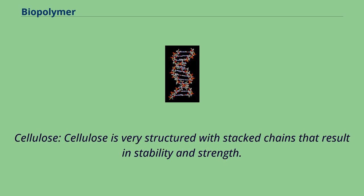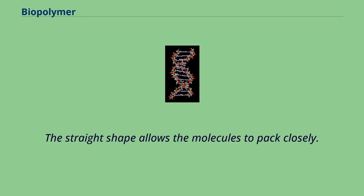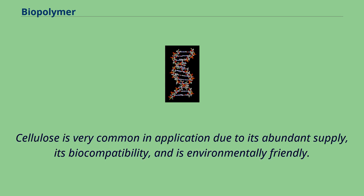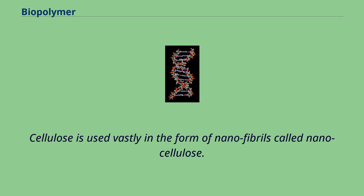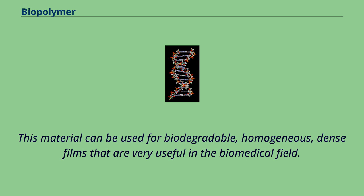Cellulose is very structured with stacked chains that result in stability and strength. The strength and stability come from the straighter shape of cellulose, caused by glucose monomers joined together by glycosidic bonds. The straight shape allows the molecules to pack closely. Cellulose is very common in application due to its abundant supply, biocompatibility, and environmental friendliness. Cellulose is used vastly in the form of nanofibrils called nanocellulose. Nanocellulose presented at low concentrations produces a transparent gel material, which can be used for biodegradable, homogeneous, dense films that are very useful in the biomedical field.